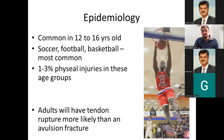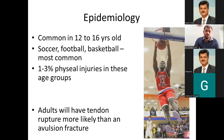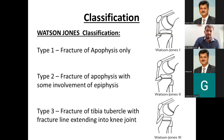The adult counterpart of this injury is usually a patellar tendon rupture, not a tibial tuberosity avulsion. In adults, because the bone is fused to the metaphysis, it is the tendon that ruptures. In adolescents, the bone avulses from the growth plate.